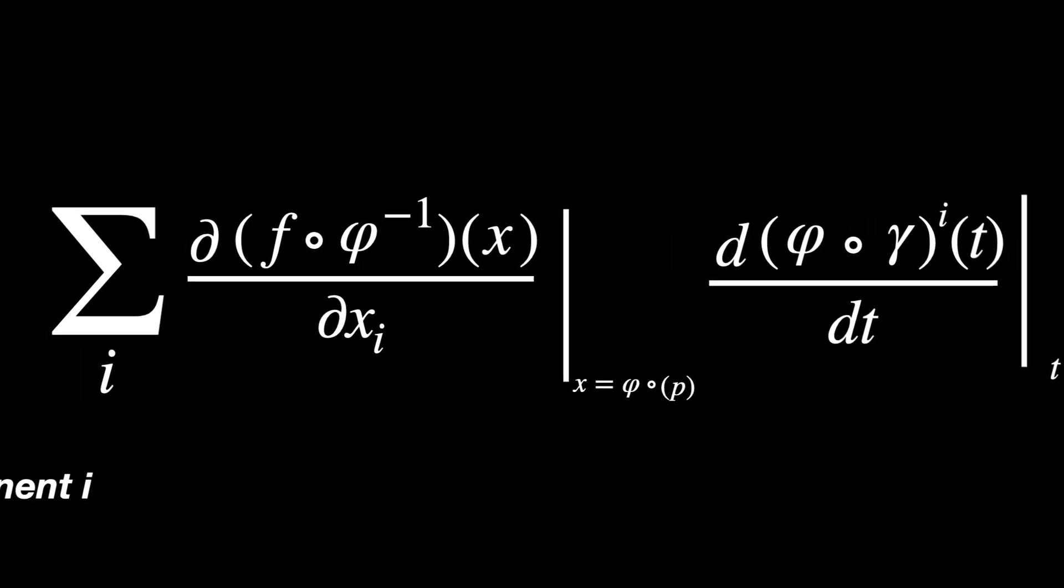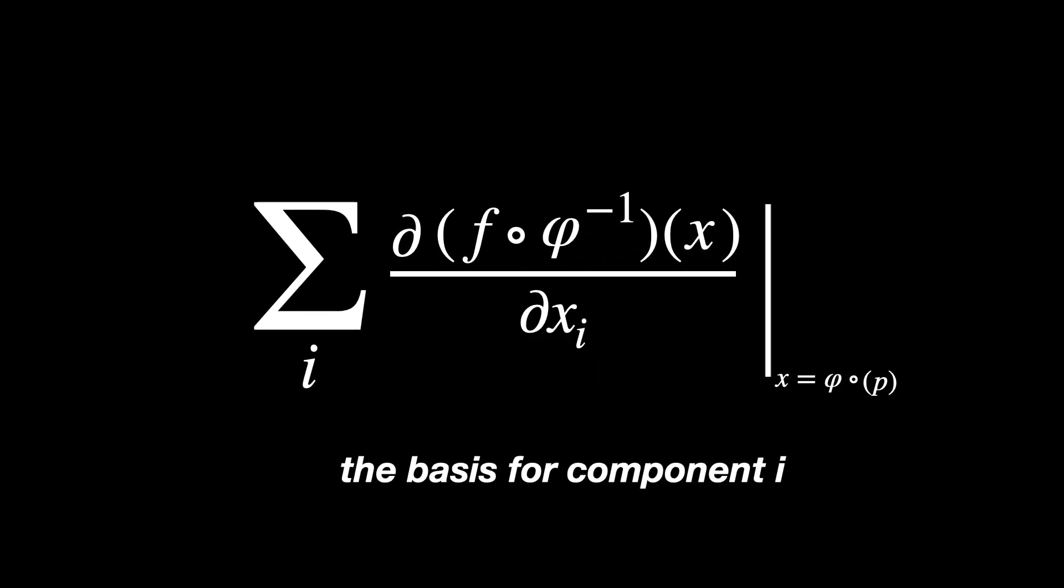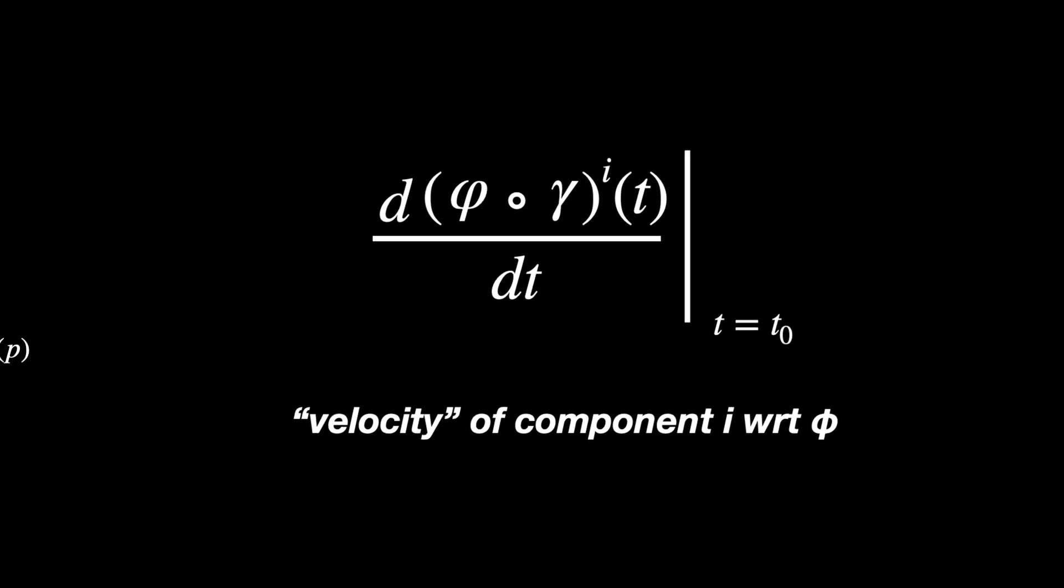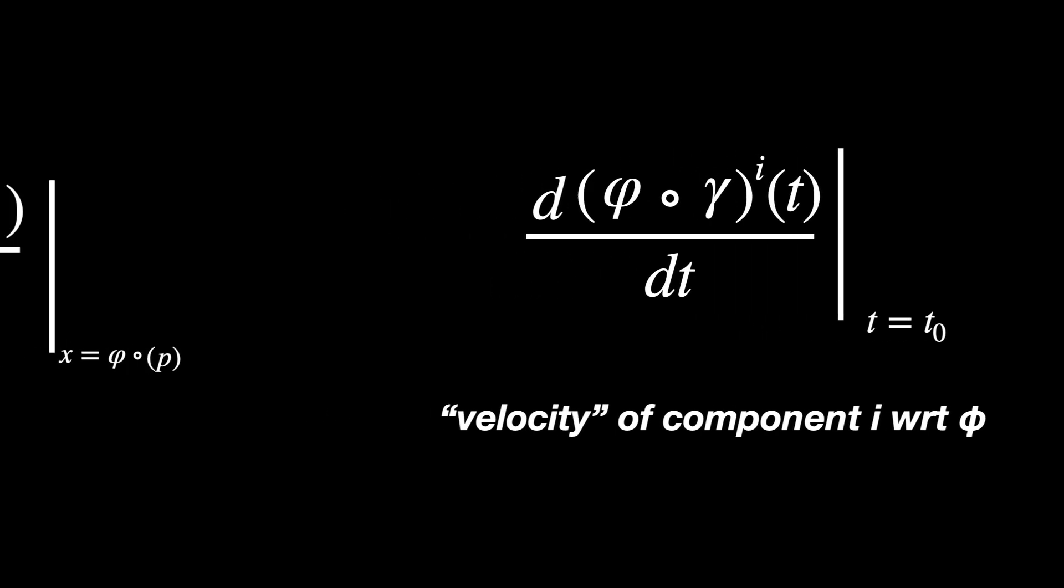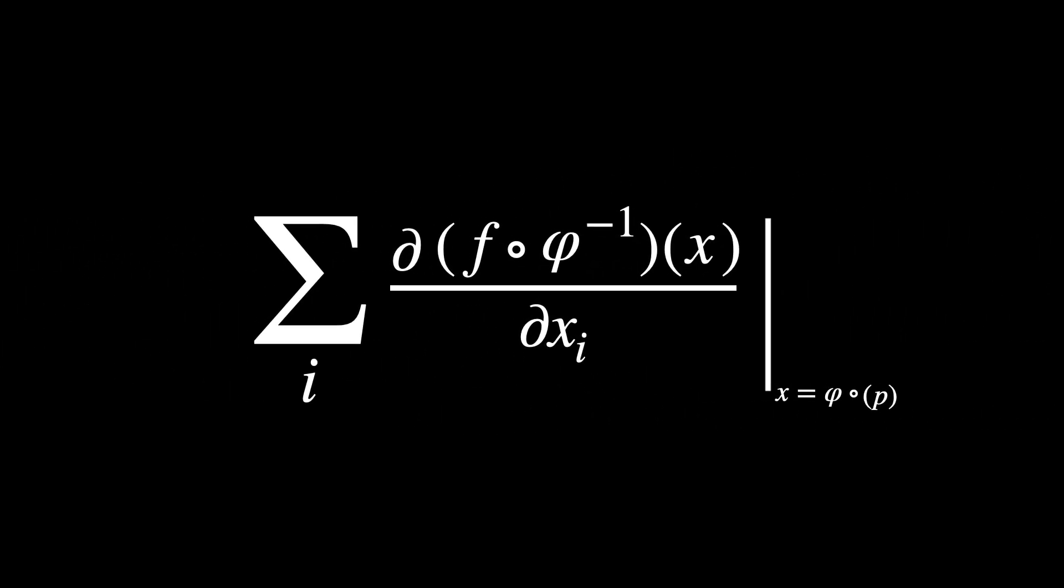With the left part being the basis for component i. And the right part, the velocity of component i with respect to phi. Here's something that is a little weird. We're going to rewrite the basis like this.